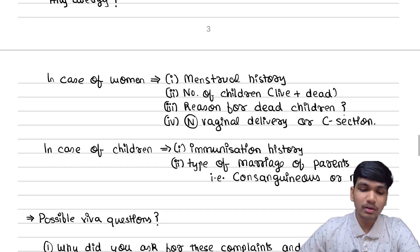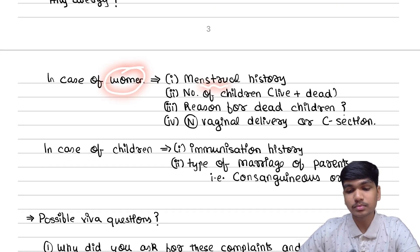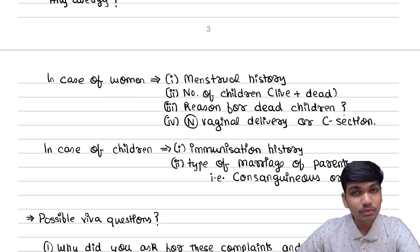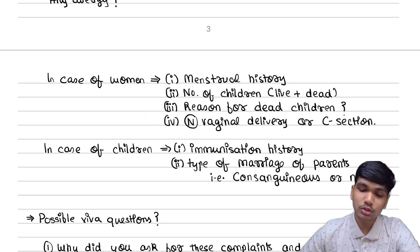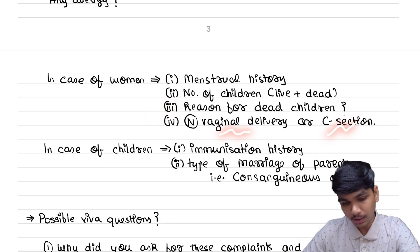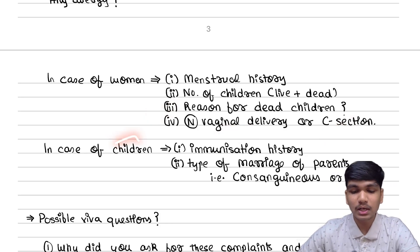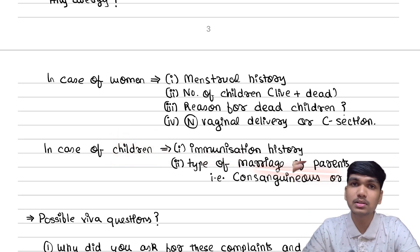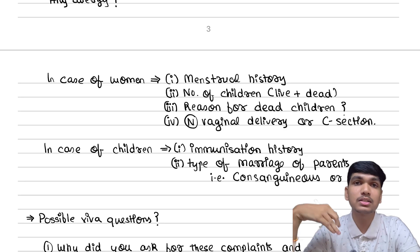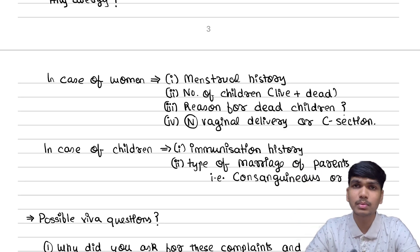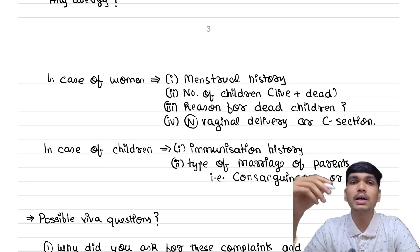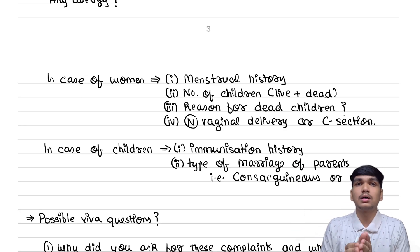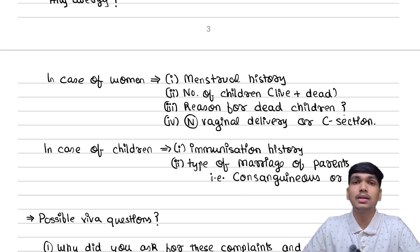In case of women, ask the menstrual history, number of children — live and dead, including both — and the reason for deaths, whether it was a normal vaginal delivery or a C-section. In case of children, know the immunization history and the type of marriage the patient's parents underwent — whether it is a consanguineous or a non-consanguineous marriage — because consanguineous marriage has an increased incidence of genetic diseases.